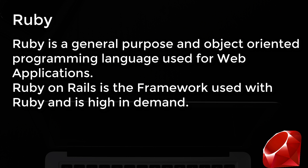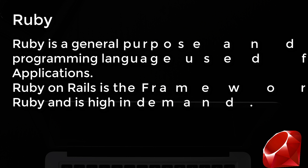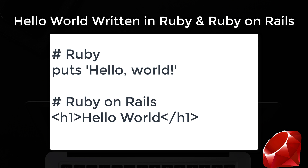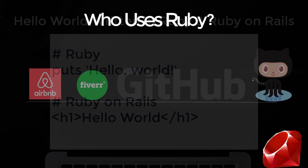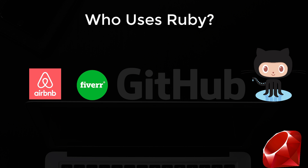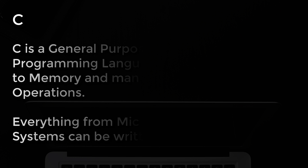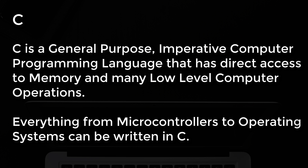Number 8: Ruby. Ruby is a general-purpose, object-oriented programming language used for creating web applications. Ruby on Rails is the framework used with Ruby and is high in demand. This is how you write hello world in Ruby and Ruby on Rails, and here are just a few of the companies that use it.